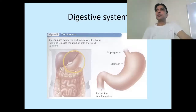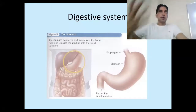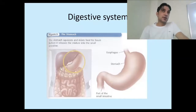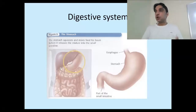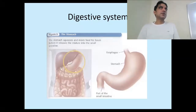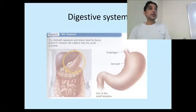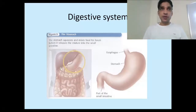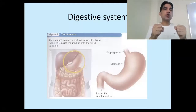The internal walls of the stomach contain glands called gastric glands. The gastric glands produce a mixture called gastric juice. That mixture contains an enzyme called pepsin — a very famous enzyme — as well as HCl and other chemicals.